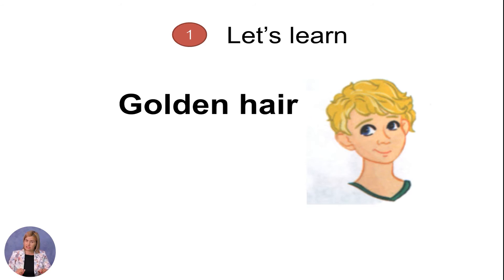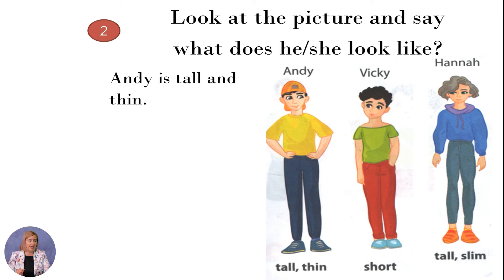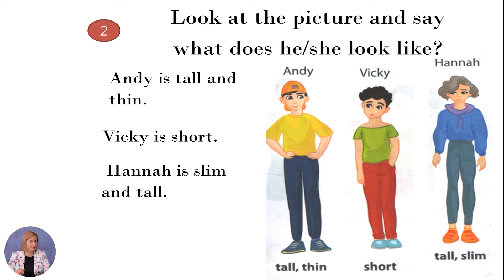It is time to practice the learned vocabulary. Look at the picture and say what does he/she look like? Think for some seconds. Now let's check. Andy is tall and thin. Vicky is short. Hannah is slim and tall.